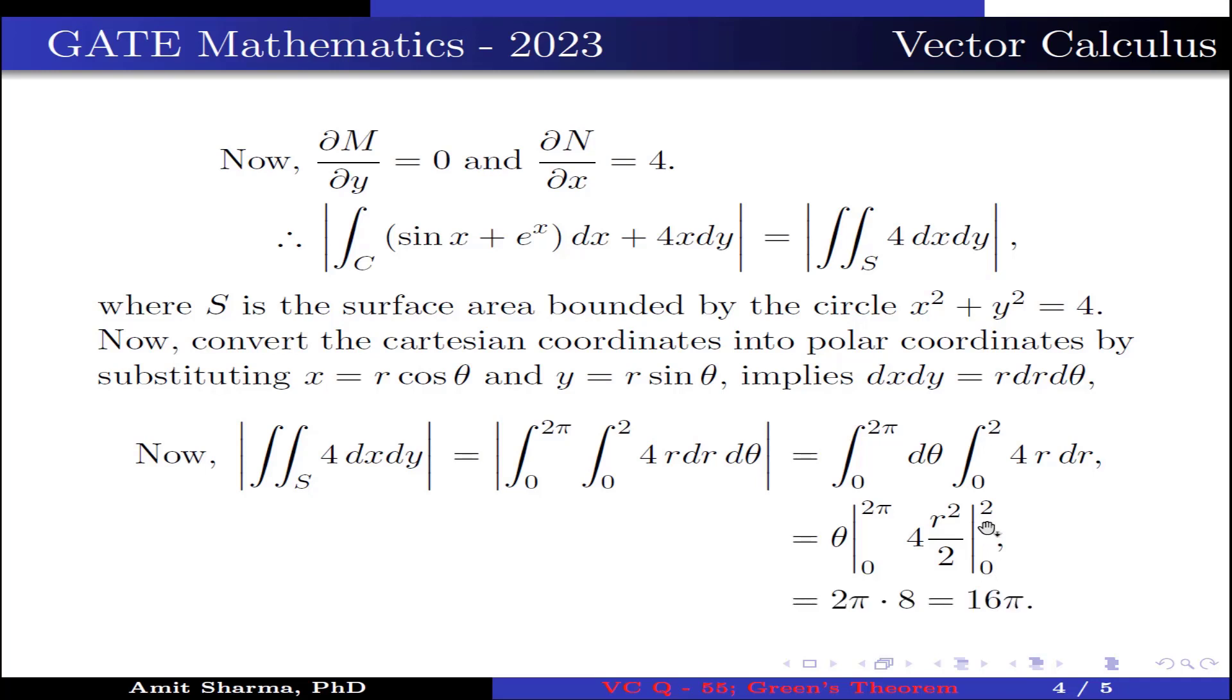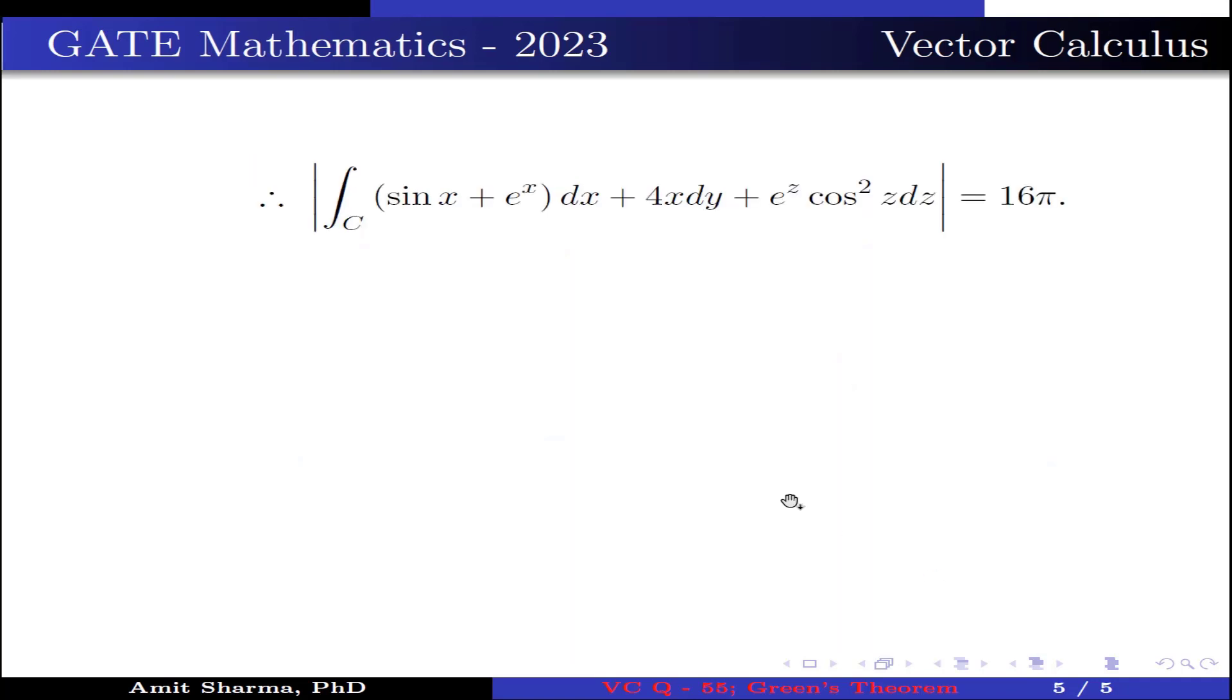Now, substituting the limit, we get 2π × 8 which equals 16π. This implies |∫_C (sin x + e^x)dx + 4x dy + e^z cos² z dz| = 16π. Hence, the value of α is 16.